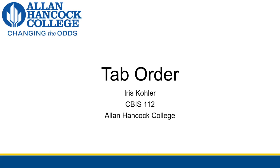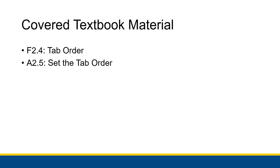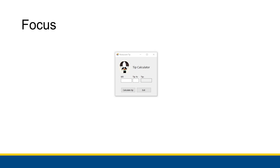This video covers another really helpful accessibility tool for users who either can't use a mouse for whatever reason, or would prefer to use a keyboard and use the mouse minimally. This tool is known as the tab order, and it allows users to use tab to interact with different elements of your applications. This will cover F2.4, which is about the tab order, and A2.5, which is about setting the tab order. A2.5 is going to provide great practice, so make sure you run through the 'apply the concepts' section.